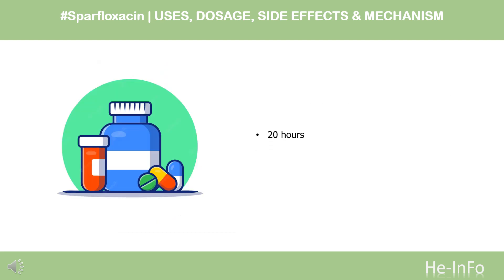Half-life. Mean terminal elimination half-life of 20 hours, range 16 to 30 hours. Prolonged in patients with renal impairment with creatinine clearance less than 50 mL per minute.